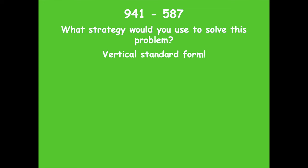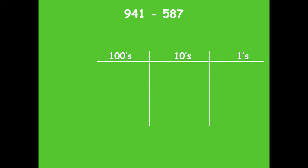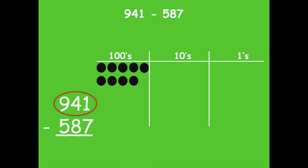941 minus 587. What strategy would you use to solve this problem? I'd probably use the vertical standard form just because it looks like I'm going to have to do some decomposing, and sometimes that's harder for me to follow in my head with all those steps. So it's easier if I can write it out. Here's my place value chart, and here's my problem written vertically. Remember, your numbers are lined up nice and neat by their place value. We start with modeling 941 because that's the whole, and when we're subtracting, we're starting with the whole.